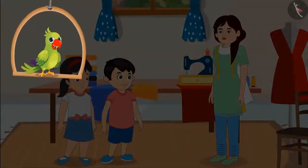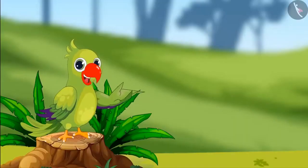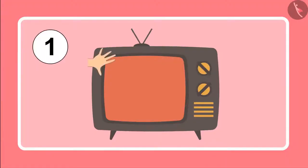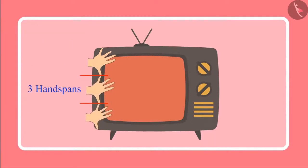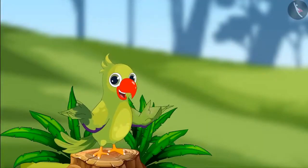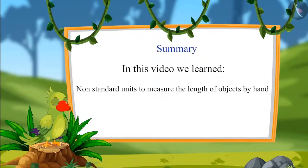So children, to know the length of an object we measure it. In this video, we measured objects using hand spans. For example, the width of this TV is one, two, three — three hand spans wide.